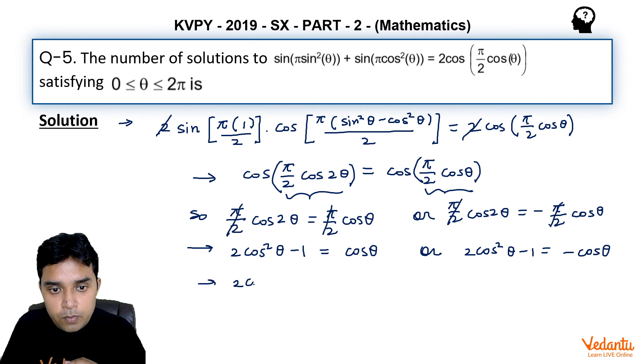This gives us two simple quadratics: it will be cos²θ - cosθ - 1 = 0, or here it will be 2cos²θ + cosθ - 1 = 0.